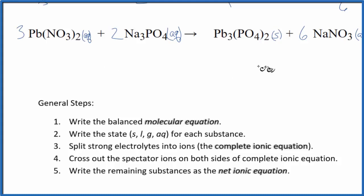After that, those are the states. Now we can split the strong electrolytes apart into their ions, and that gives us what's called the complete ionic equation, sometimes called the total ionic equation. The nitrate here—nitrates are always 1-.